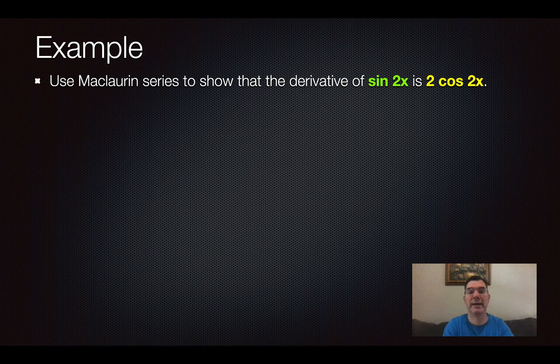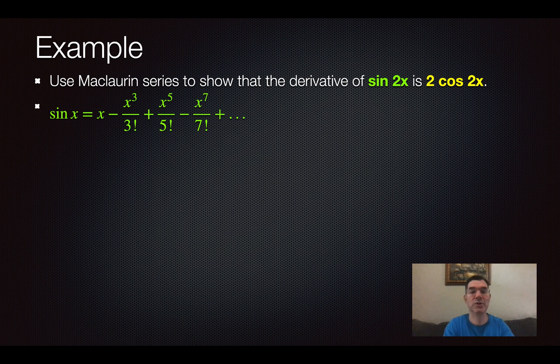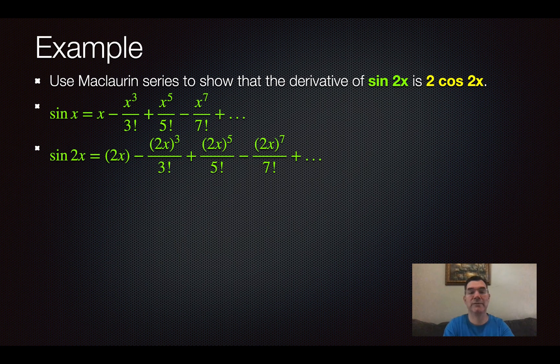We're going to show that the derivative of sin 2x is 2 cos 2x. We know that based on chain rule, but it would help make us feel better about it if the Maclaurin series followed that same relationship. So there is the Maclaurin series for sin x. We know that from earlier lessons. And so sin 2x is just going to be the same series, but every x is replaced with 2x.